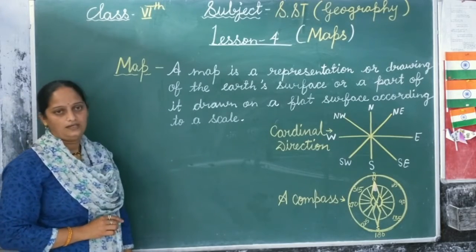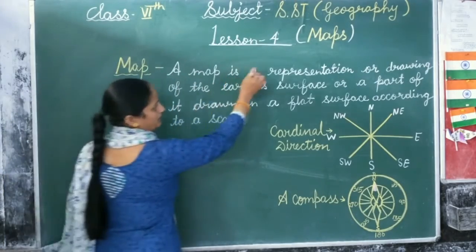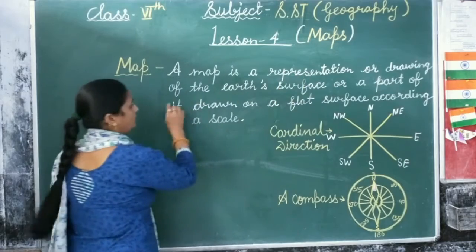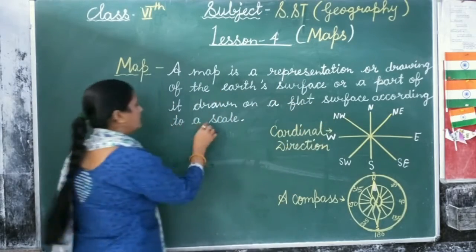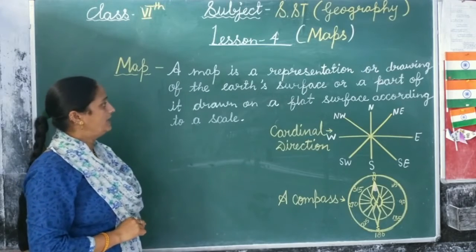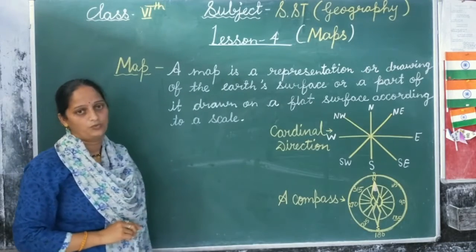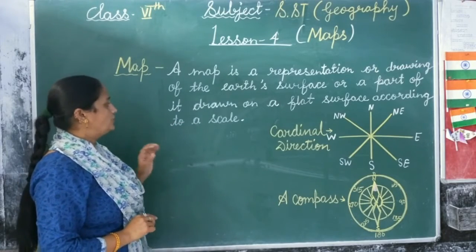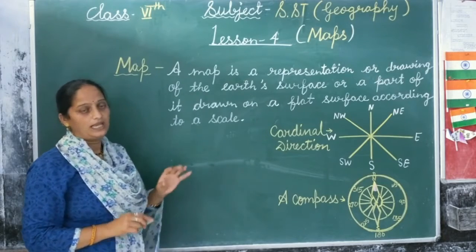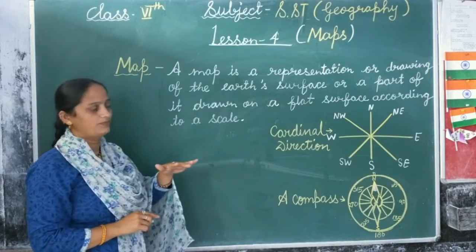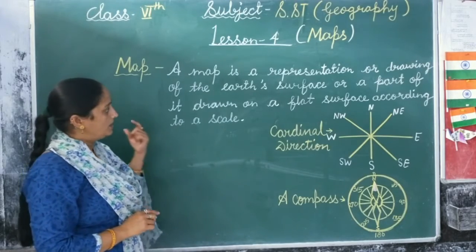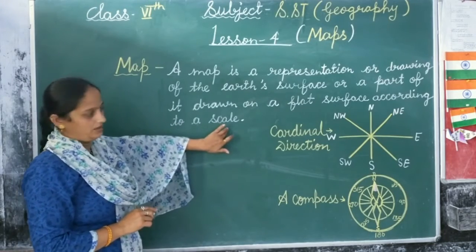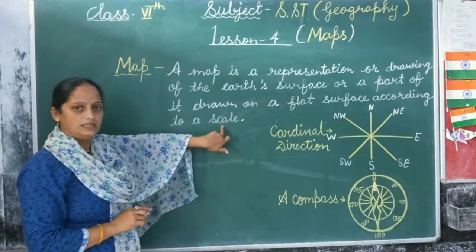A map is a representation or drawing of the earth's surface, or a part of it, drawn on a flat surface according to a scale. Map जो होता है वो earth की सतह का एक drawing होती है, और एक flat surface पे बनाया हुआ एक drawing होता है, जिसे उस जगह की — जिसकी हमें study करना है — उसकी according बनाया जाता है। About the scale, we will describe further in this lesson.